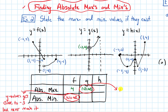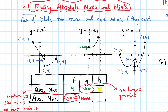For the absolute min of g, it's the same situation as f — the y values get really close to 2 in one direction but never reach it, so there is none for the absolute min either. But for h, this one is going to have both. The max value — the biggest y value — is 4. The smallest y value is −3, occurring at two spots. There is something about this third graph that guarantees it will have an absolute max and min somewhere on the interval from −4 to 4 where it's defined, and that will be the basis of our next theorem.